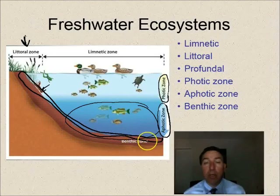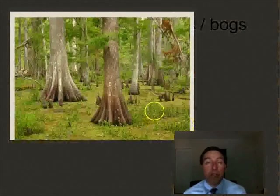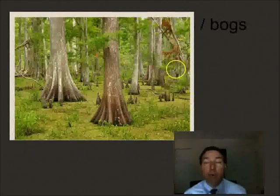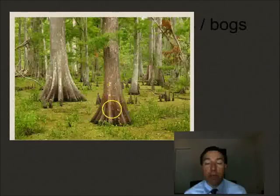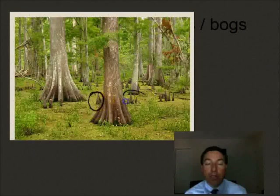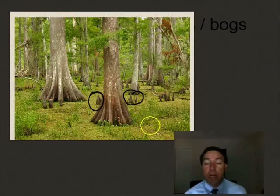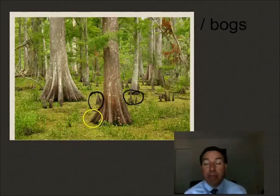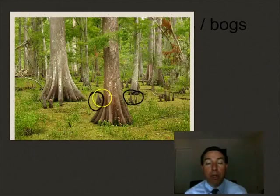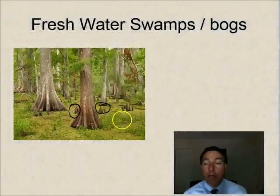We also have transitional ecosystems — freshwater swamps and bogs. This is a cypress swamp; you can tell by the cypress knees, which are parts of the roots that come up out of the swamp. The reason they do this is to exchange oxygen with the surrounding environment, because swamps and bogs typically have no oxygen under the water — very anoxic sediments with thick layers of decaying matter. So these trees send roots up out of the water to obtain oxygen.